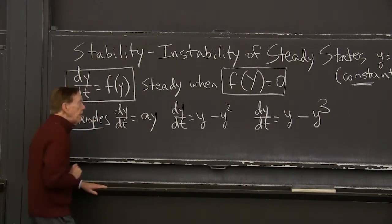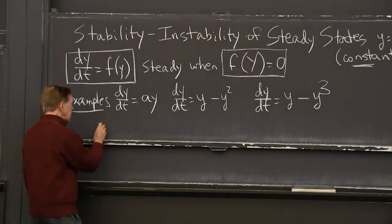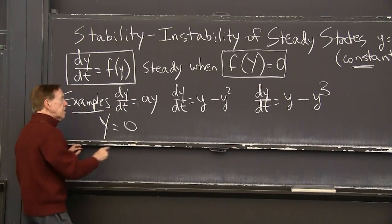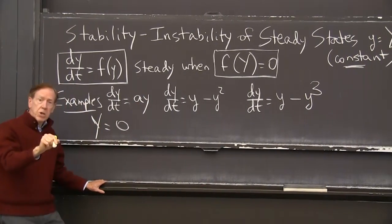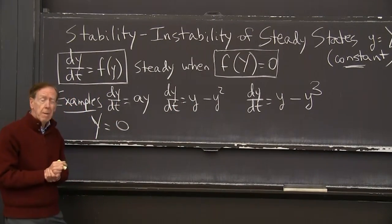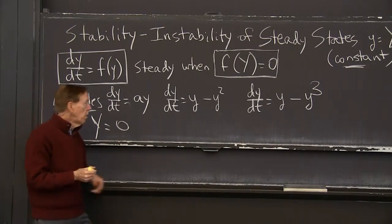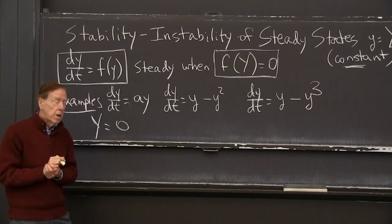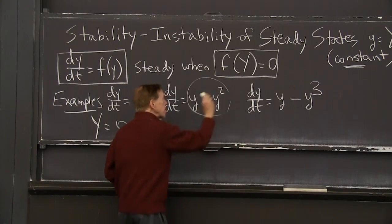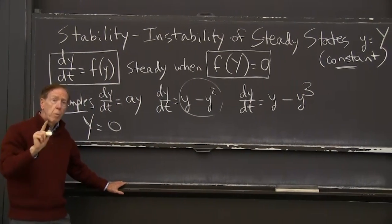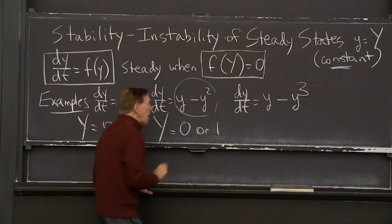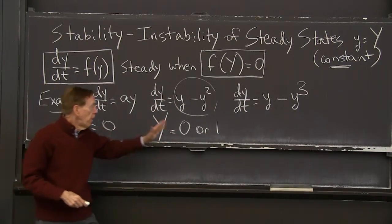So what is capital Y in this case? Well, this is f of y here. So if I set that to 0, the steady state is capital Y equals 0 in this case. That is 0. So if I start at 0, I stay at 0. OK. Here is a second example. For example, the logistic equation, where I've taken the coefficients to be 1.